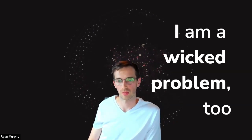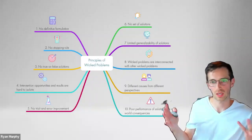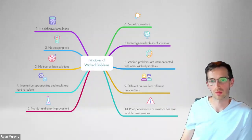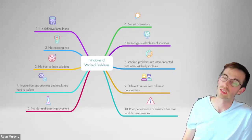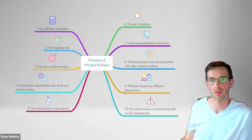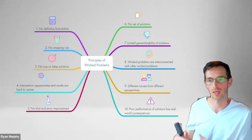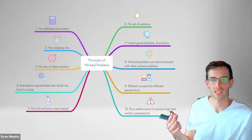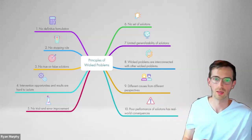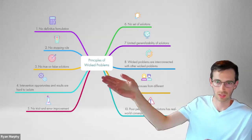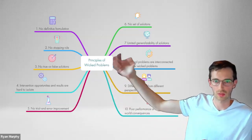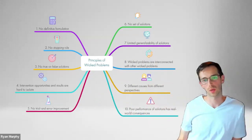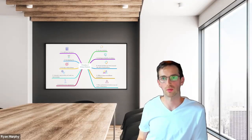Today we'll be talking about a concept we throw around a lot in systemic design: wicked problems. Rittel and Webber came up with this concept — I think it was in '63 — and we've been throwing it around in many fields ever since. This idea that there are some problems in the world that aren't easy to attack: there are no true or false solutions, no trial-and-error improvement, no particular set of solutions. Wicked problems are things we focus on in systemic design when invited to support solving complex problems.